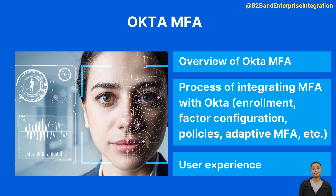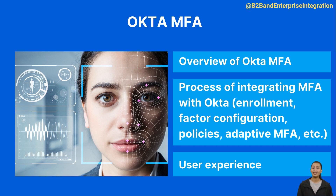3. Policy configuration: policies control who must use MFA and when. For instance, you could require MFA for all users, only certain groups, or based on network or location. Policies are configured in the admin console. 4. Adaptive MFA: this advanced feature uses machine learning algorithms to determine the risk level of a login attempt and adjust authentication requirements accordingly. It can prompt for additional factors when risk is detected, such as unrecognized devices or unusual locations.